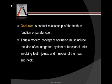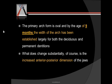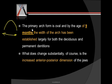The muscles of the head and neck are also involved. The primary arch form is oval, so the basic arch form is oval, and by the age of nine months the width of this arch has been established — not only for the deciduous but also for the permanent. It doesn't sound true that by nine months of age the width of the arch has been fully formed.